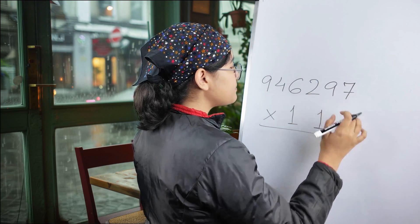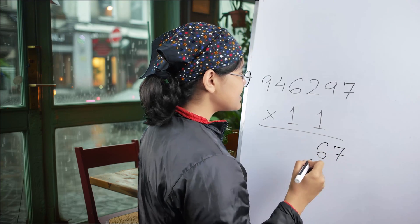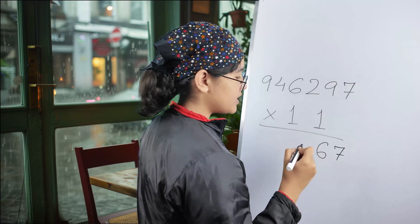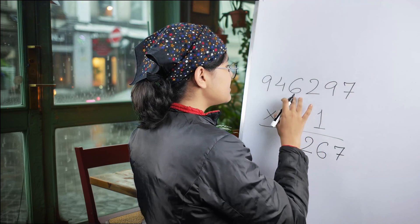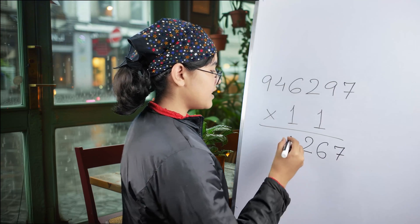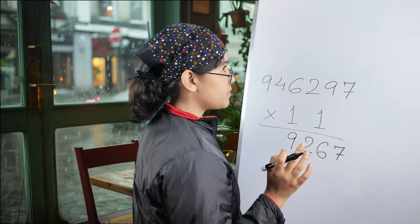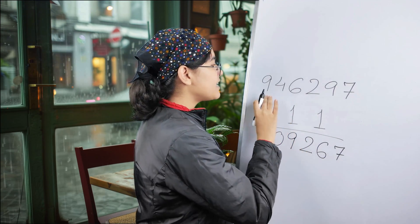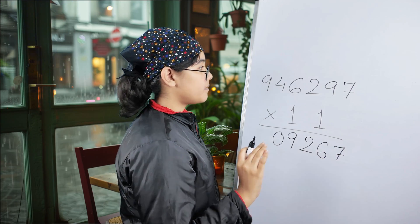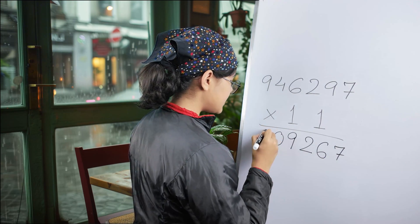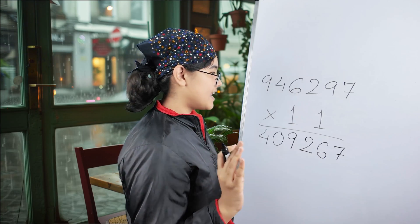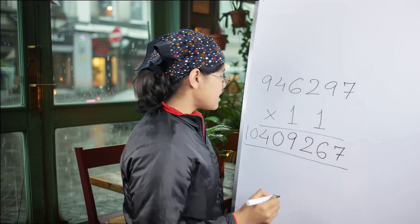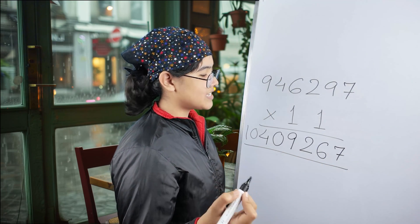7 we put down. 9 plus 7 we add up, 16. 6 we write, and 1 in hand. 2 plus 9 equals 11, plus 1 equals 12. 1 in hand again. 6 plus 2 equals 8, plus 1 equals 9. 4 plus 6 equals 10. There was no carryover. We write 0, 1 in hand again. 9 plus 4 equals 13, plus 1 equals 14. You write 4, and 1 in hand again. So we write 9 plus 1 equals 10. So your final answer is 10,409,267.